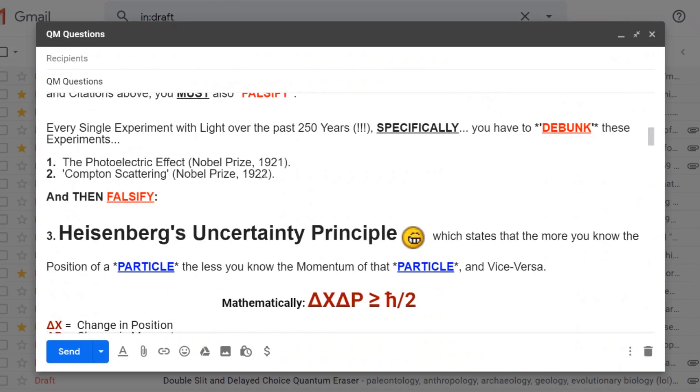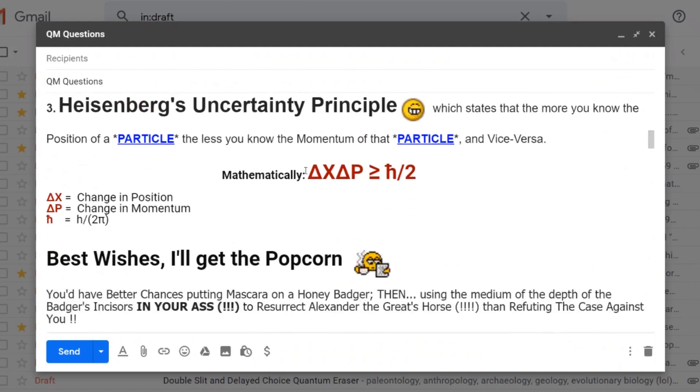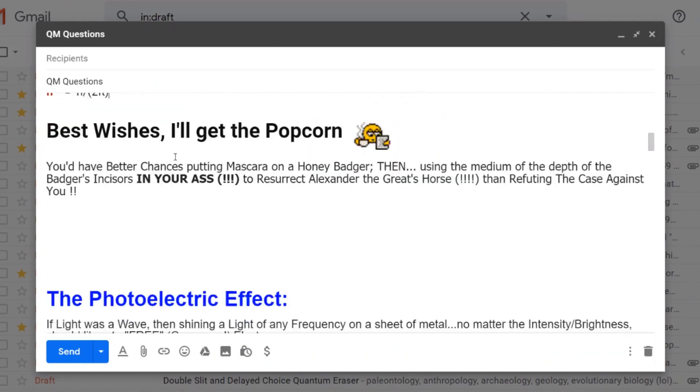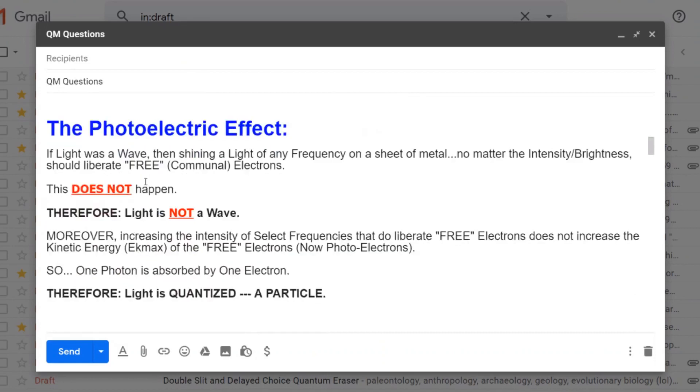And then you have to falsify Heisenberg's uncertainty principle, which states that the more you know the position of a particle, the less you know the momentum of that particle and vice versa. Here it is right here. You have to falsify all those. Best wishes, I'll get the popcorn. So I summarize these: the photoelectric effect.